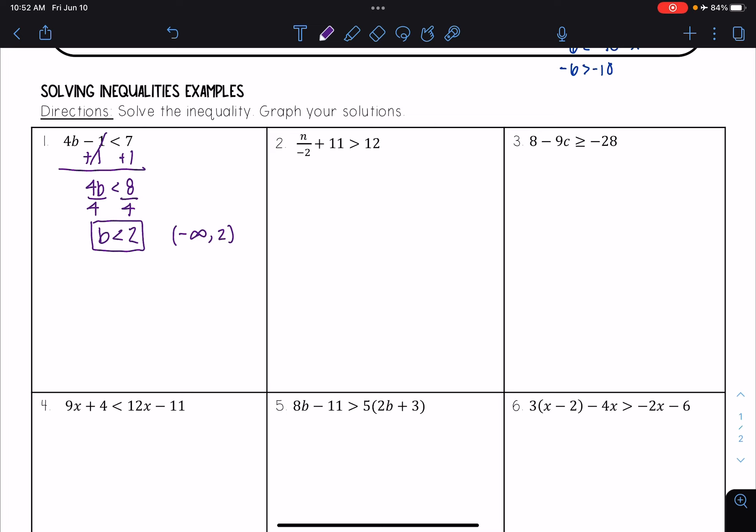And then it says to graph your solutions. So to graph that, I'm going to create my number line. I have b is less than 2. Because it's a strictly less than, that means I need an open circle. And I want everything less than 2. So I want to draw my arrow that way.